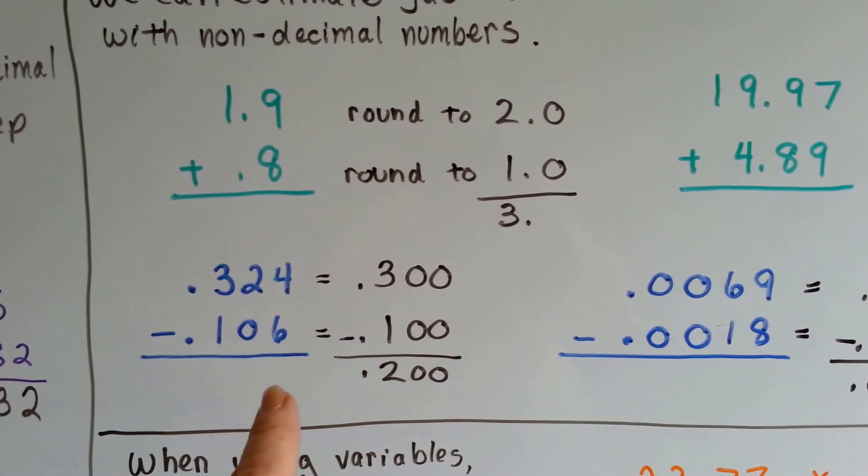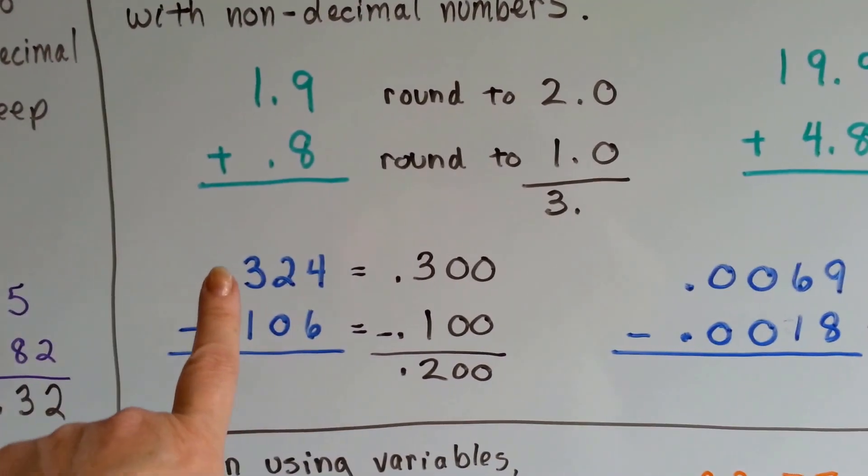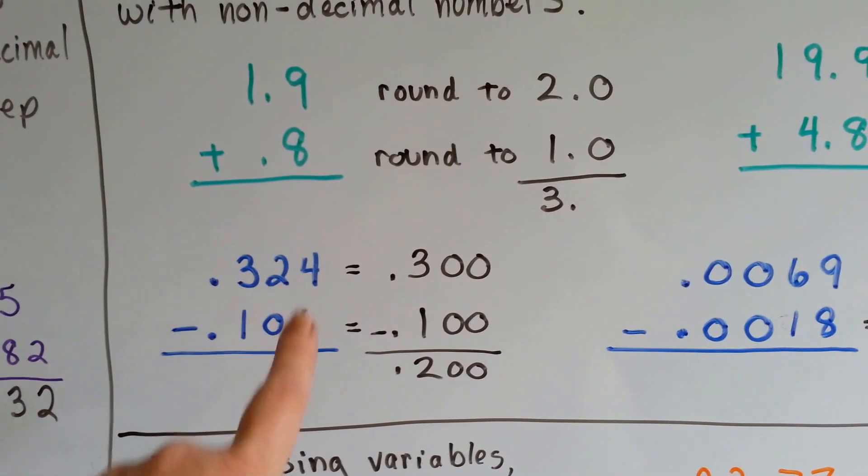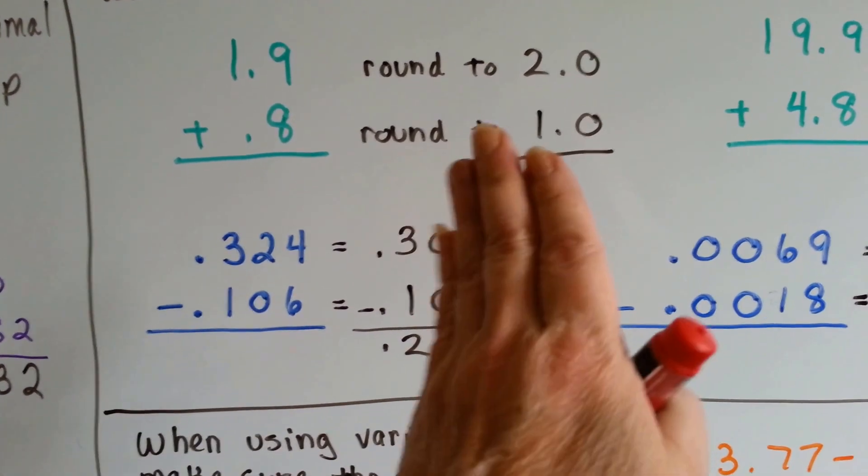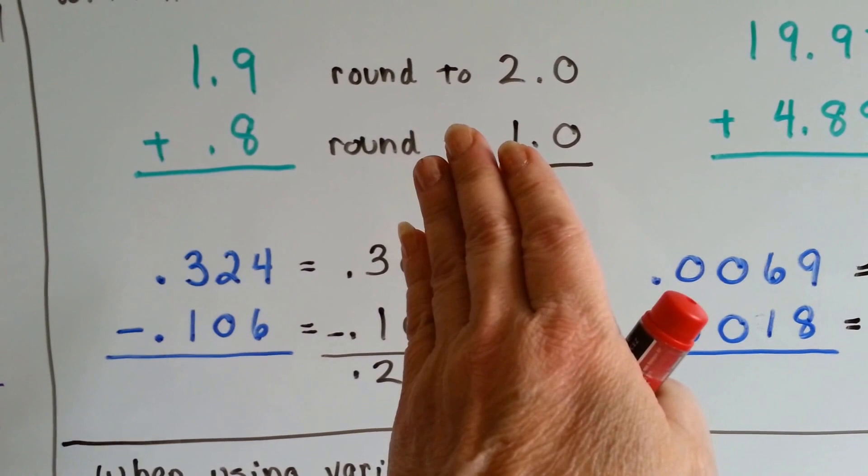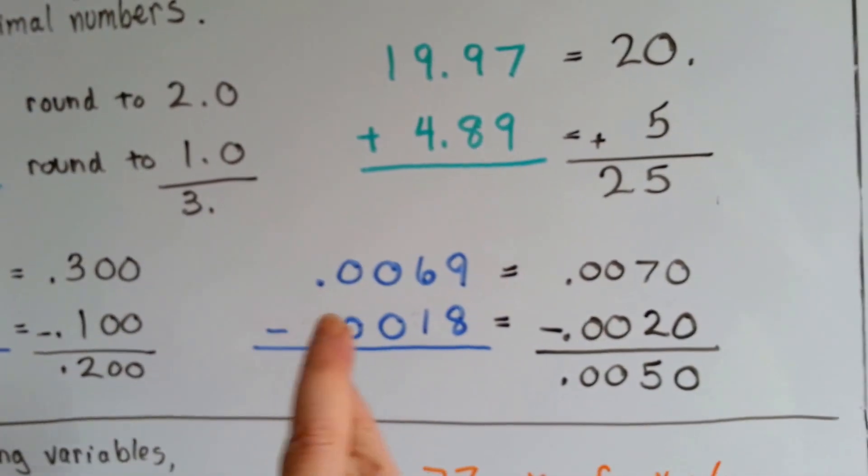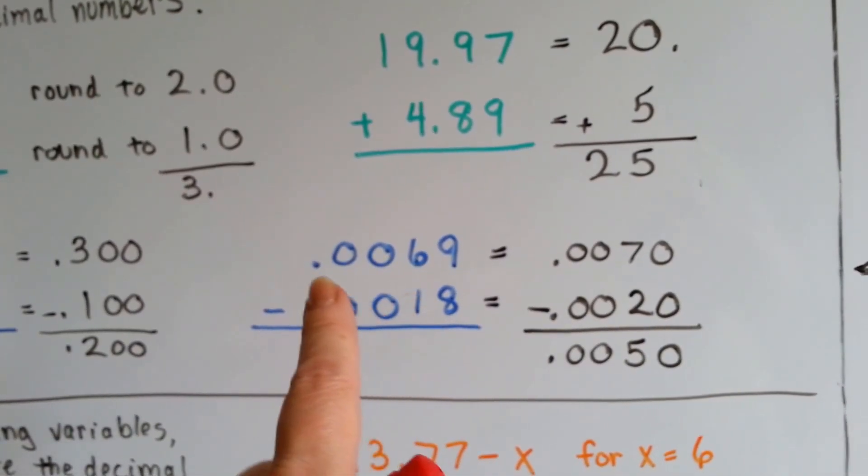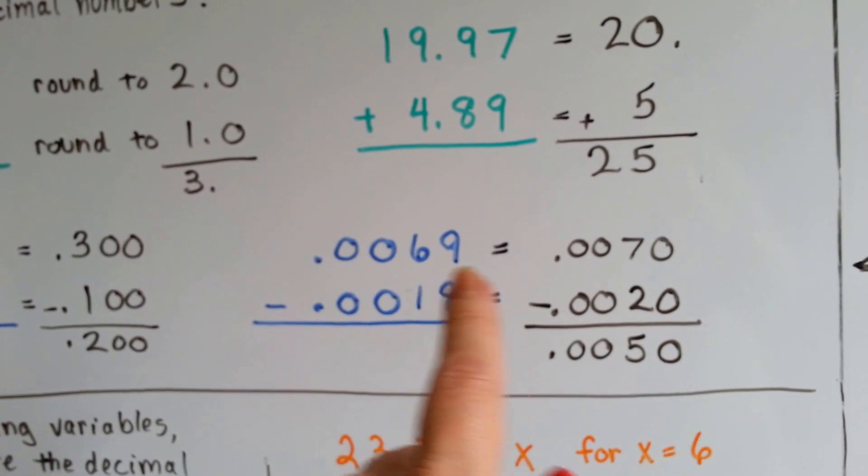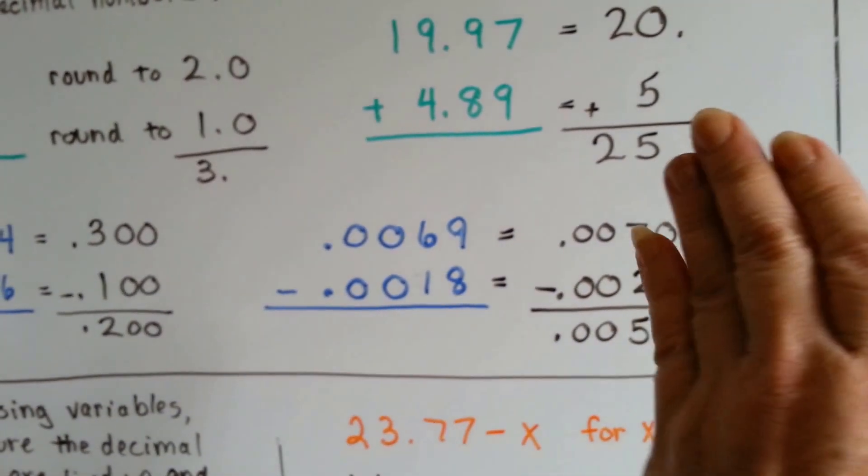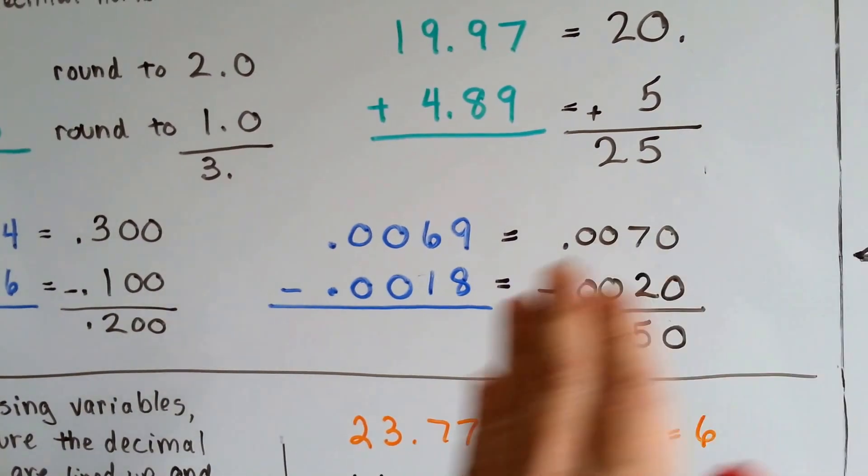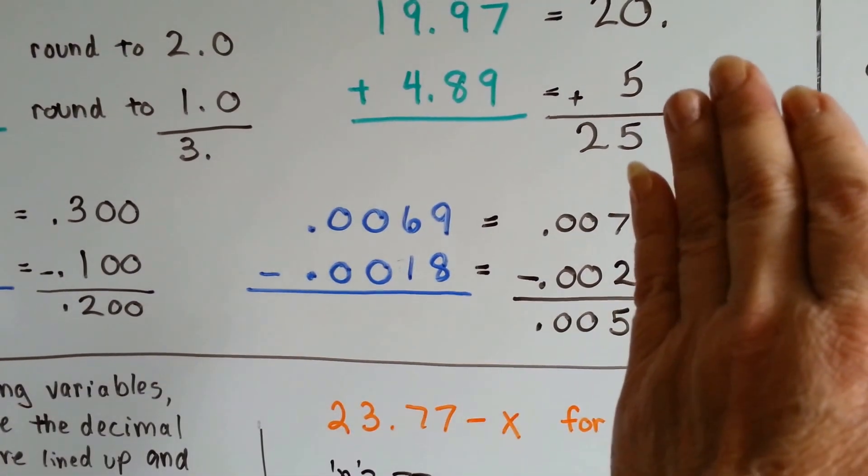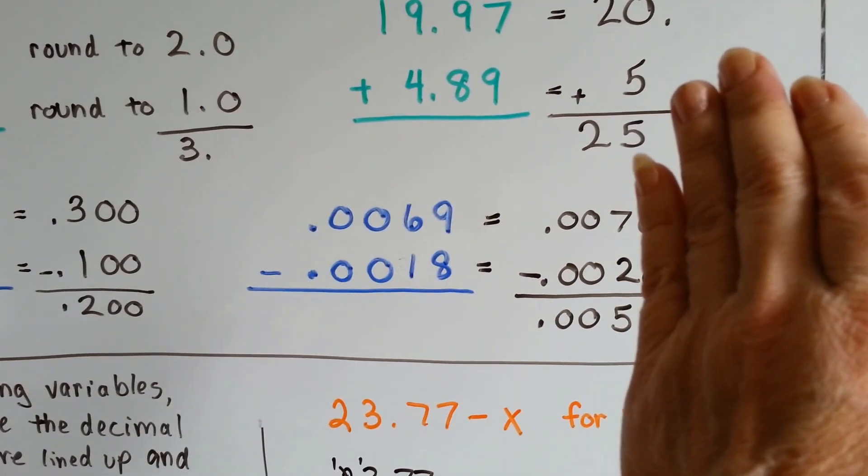And if you're estimating subtraction, it's no different than if the decimal point wasn't there. We can round this to 300 and this to 100 and say the subtraction is about 200 or .2 really, because the zeros aren't necessary. They're just placeholders. Even if we're going way into the 10 thousandths, we can do the same thing. We can round 69 ten-thousandths to 7 thousandths. Just take the zeros off. And we can round 18 ten-thousandths to 2 thousandths. And our answer for subtraction would be 5 thousandths.